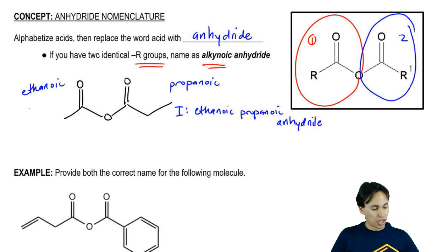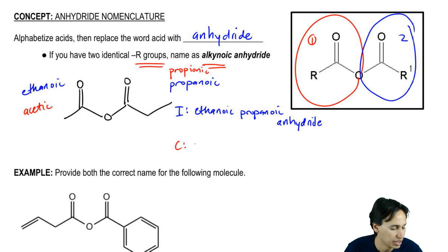Common. Common is going to be acetic and propionic. These are the ones you're supposed to memorize. Again, alphabetical order. We're going to get acetic, propionic, anhydride.